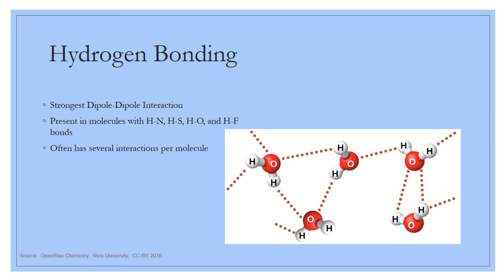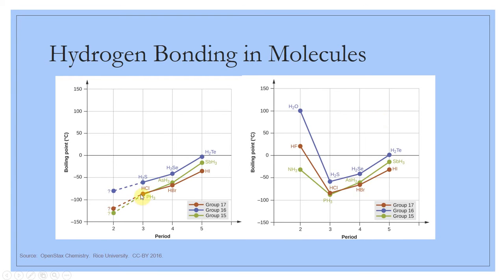These hydrogen bonds are not covalent bonds — not as strong as those. But because of all these interactions, molecules tend to be more close-knit. Water has a very low molar mass, so its London dispersion force is very low, but it has hydrogen bonding — a type of dipole-dipole — that is really, really strong. Water has many properties we're going to discuss this unit that allow it to behave differently than we might expect.